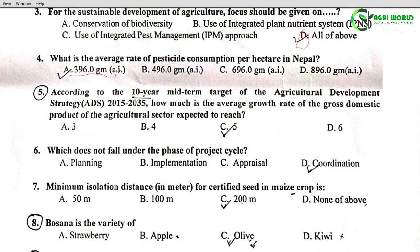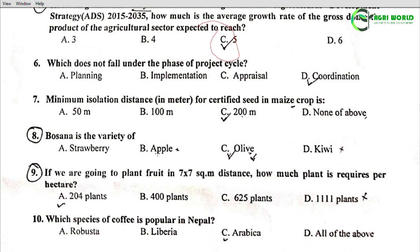Question 5: According to the 10-year mid-term target of the Agricultural Development Strategy (ADS) 2015 to 2035, how much is the average growth rate of the gross domestic product of the agricultural sector expected to reach? Options: 3, 4, 5, or 6. The correct answer is Option C: 5.